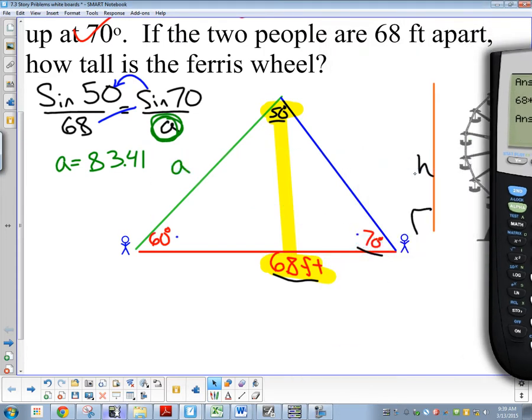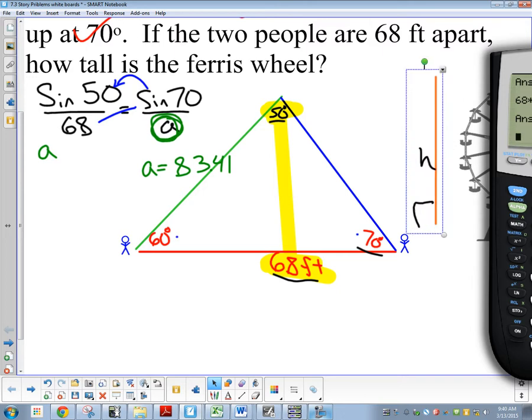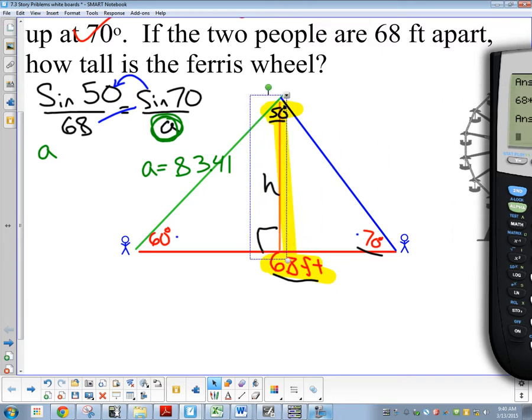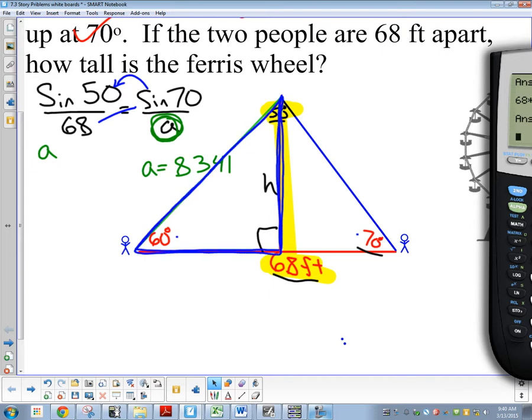We now know what A is. A is 83.41. So, once we've done that, great. That didn't solve what we wanted. Again, remember what we wanted. It was this thing right here. I wanted to know the height. My ultimate goal was to find H here. So now that we've done that outside part, think about where our focus is now. Our focus is on this triangle. In order to solve that triangle, that right triangle, you need to know three bits of information.